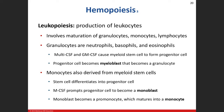The next topic is leukopoiesis — how do we make our leukocytes? We have our granulocytes, our monocytes, and our lymphocytes — those are all going to be our white blood cells. We're going to differentiate our granulocytes into neutrophils, basophils, and eosinophils.